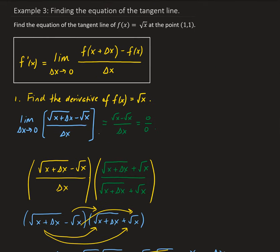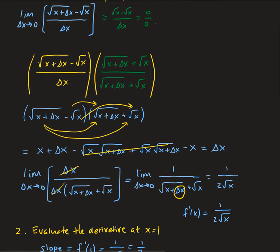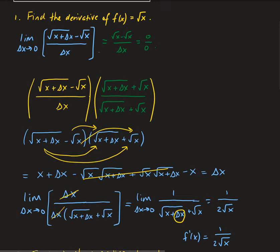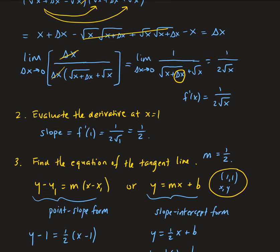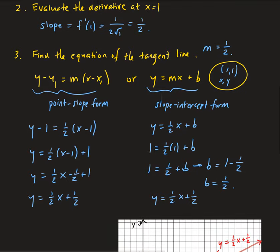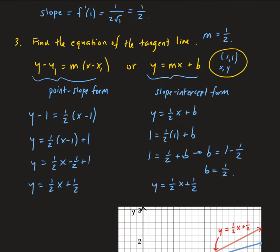To summarize: first, find the derivative of the function — in this case using the limit definition, and sometimes you may need to use the conjugate. Then evaluate the derivative at the given point to get the slope. Finally, using either the point-slope form or the slope-intercept form, plug in the slope and the given point to find the equation of the tangent line.